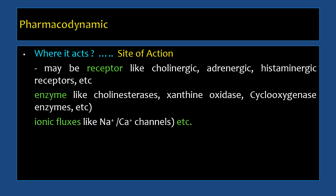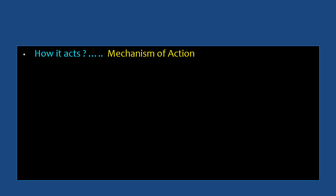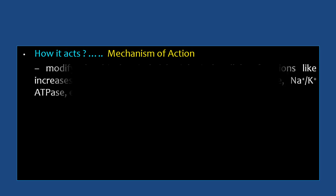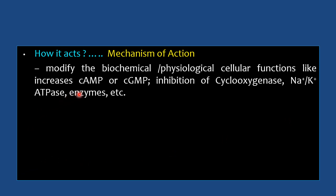The mechanism of action — how the drug acts — refers to changes occurring in the body after the receptor, enzyme, or ion flux is modified. For example, there may be an increase or decrease in cyclic AMP or cyclic GMP, inhibition of cyclooxygenase, or inhibition of sodium-potassium ATPase and a few other enzymes.